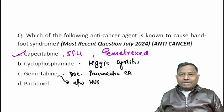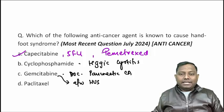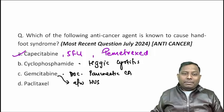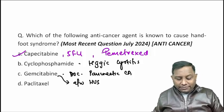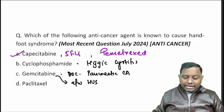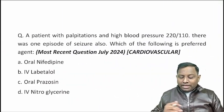Paclitaxel and docetaxel are taxanes — they are M-phase inhibitors. Do remember they are associated with the usual side effects we know. The correct answer for this question is A.